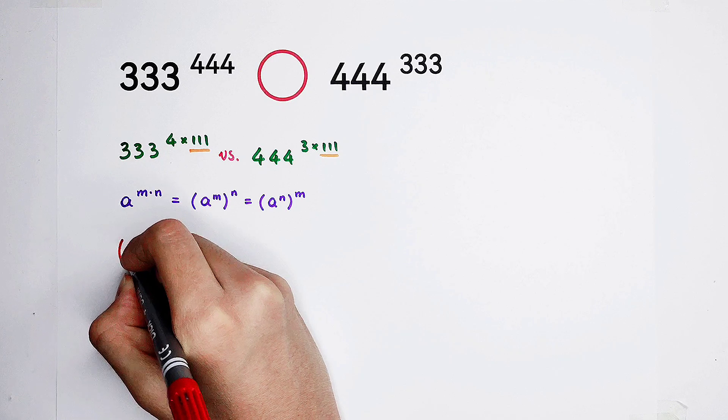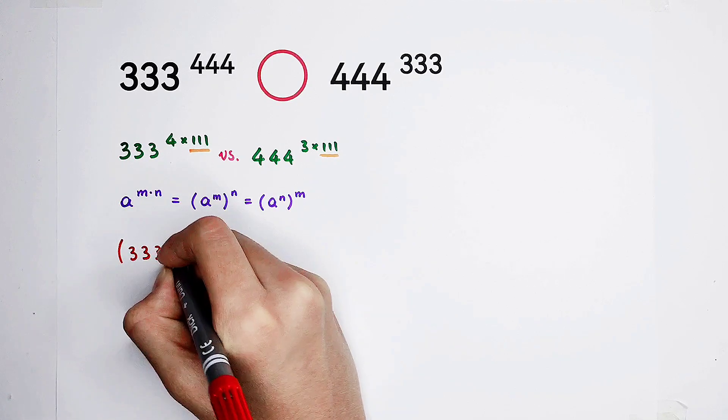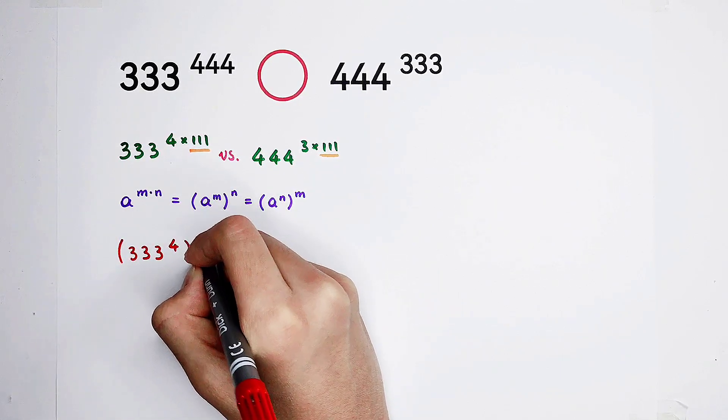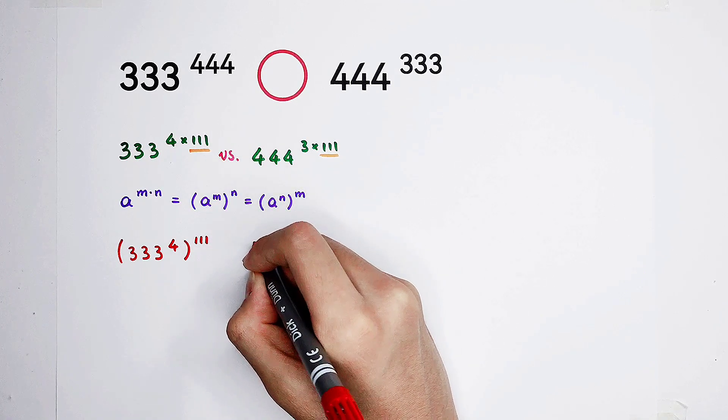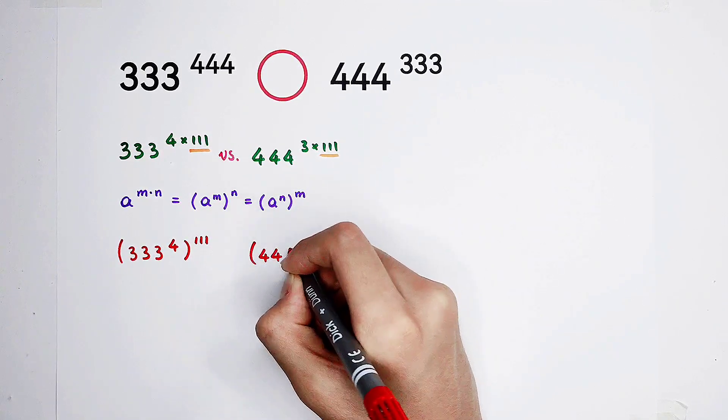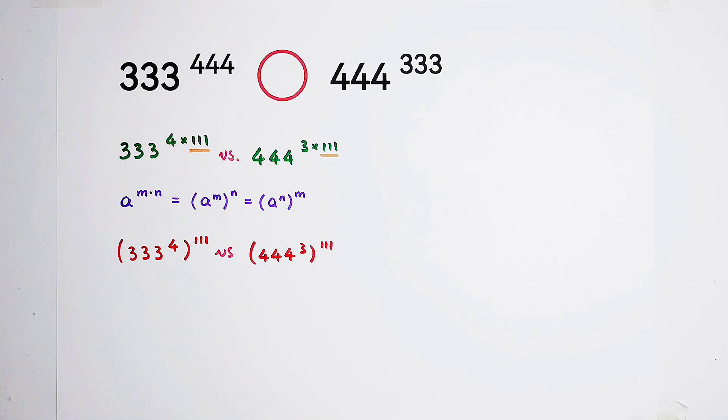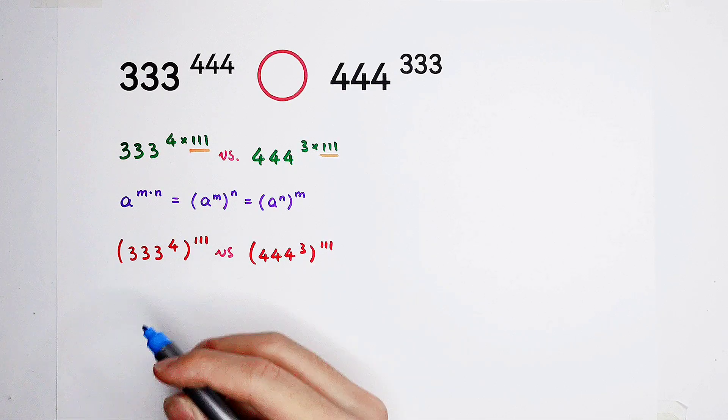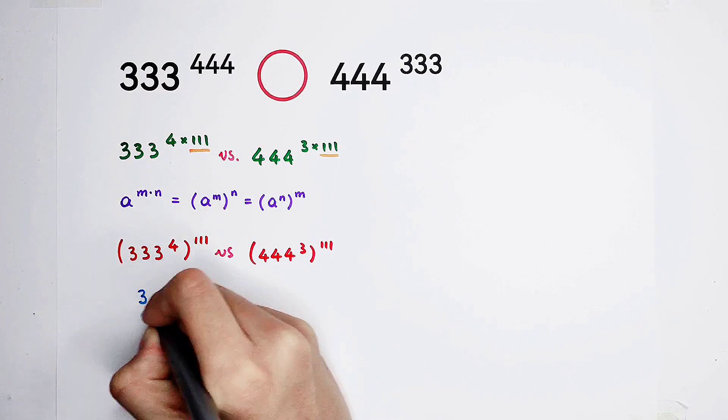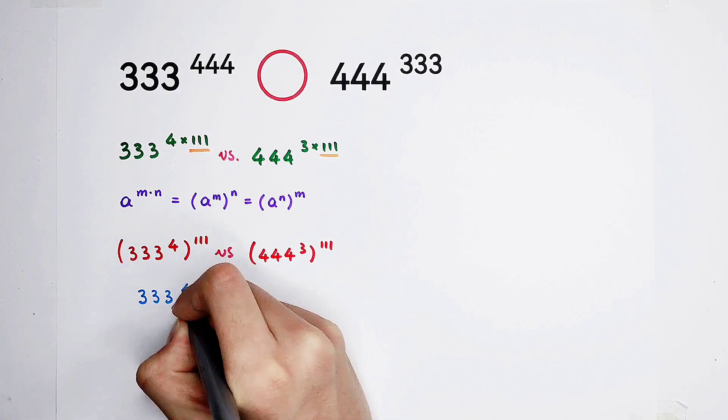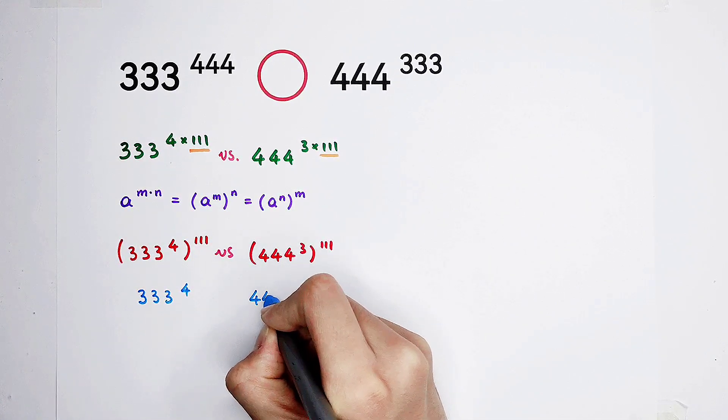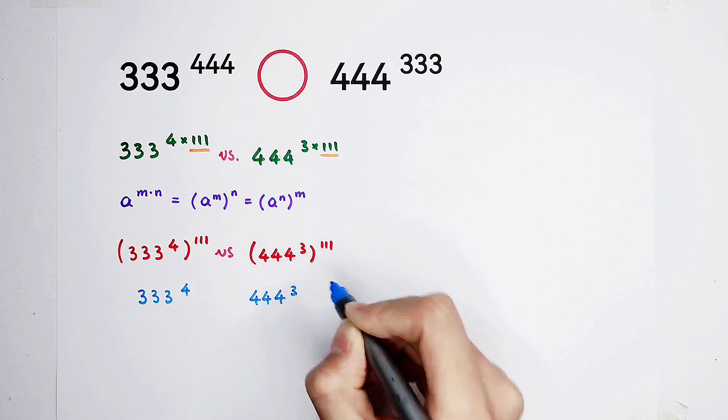These two sides must have a common exponent. So here, it can be written as 333 to the power of 4, then all to the power of 111. Here is 444 to the power of 3, all to the power of 111. They both have the exponent 111. So now we only have to compare 333 to the power of 4 with 444 to the power of 3.